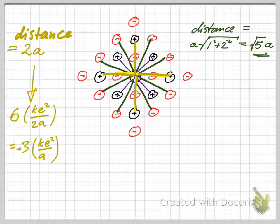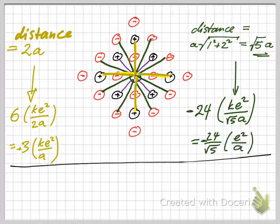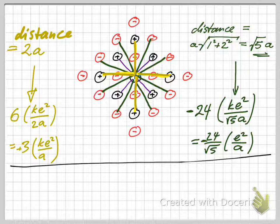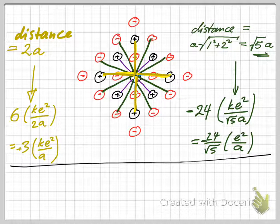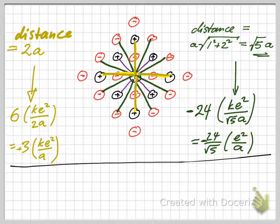For the dark green ions we get 24 of them. There's eight of them that I've drawn here, but that's only in this x-y plane. We could also look at the x-z plane and the y-z plane. In both of those planes there would again be eight, and so we get eight times three is equal to 24 such ions at a distance of the square root of five times a.